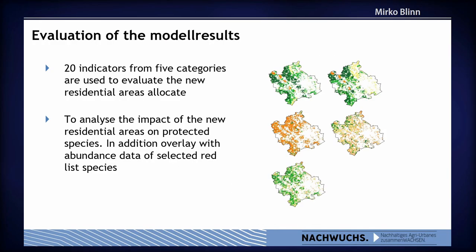We evaluate the model results with some tools. For the evaluation, we have developed 20 indicators from five categories, used to assess sustainability. We can analyze the impact of new residential areas on protected biotopes and protected plants, showing conflicts for regional and urban planning at a very early stage. On this slide, you can see some indicators covering social infrastructure, agricultural value of areas, and ecological questions.